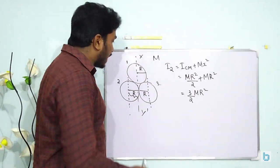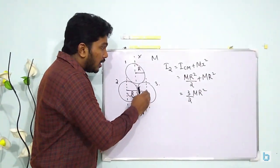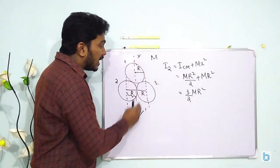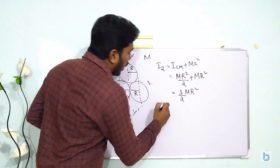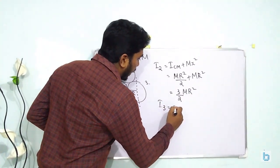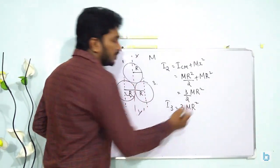Now from the figure it is very clear that I_2 for ring 2 and for ring 3, the moment of inertia about the y y' axis will be the same. So for ring 3 also, I_3 is also equal to, by applying parallel axis theorem, 3 by 2 mr square.